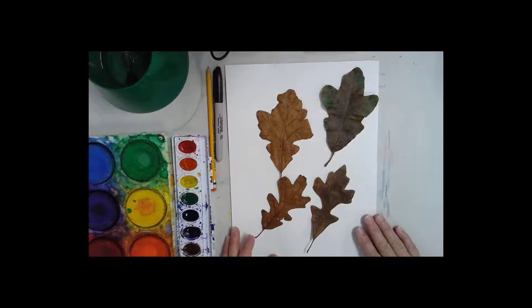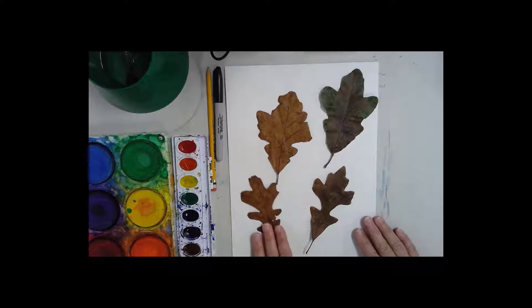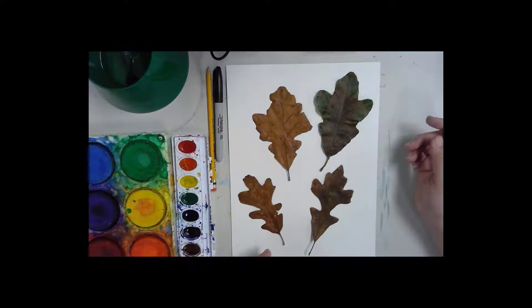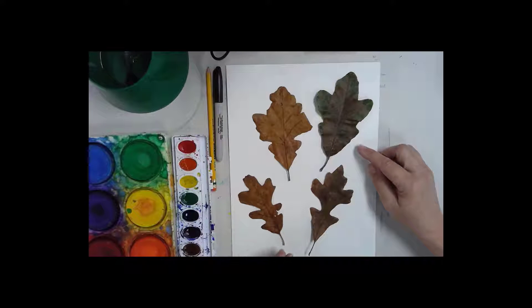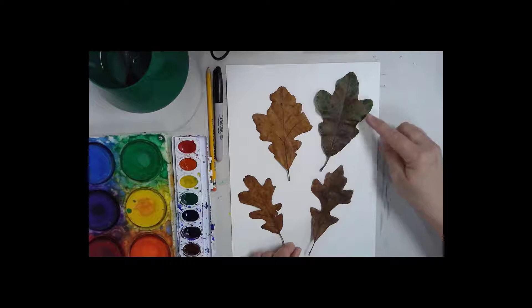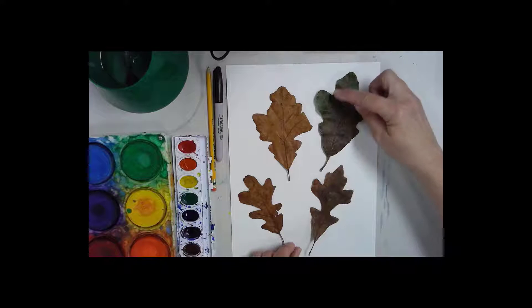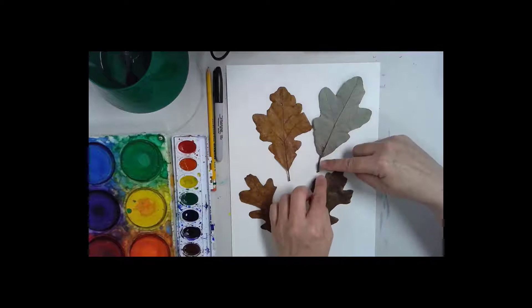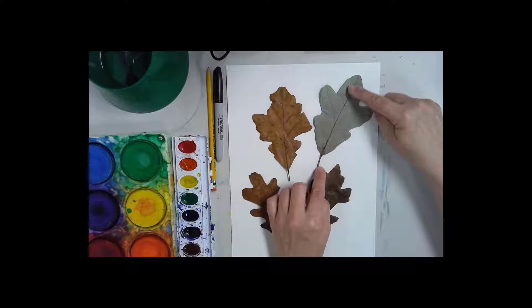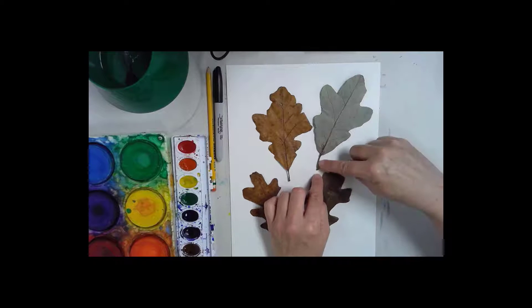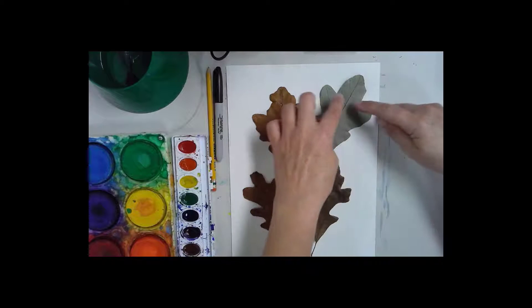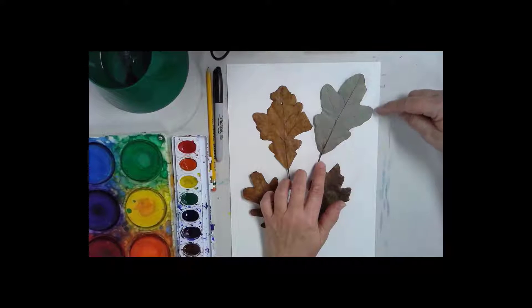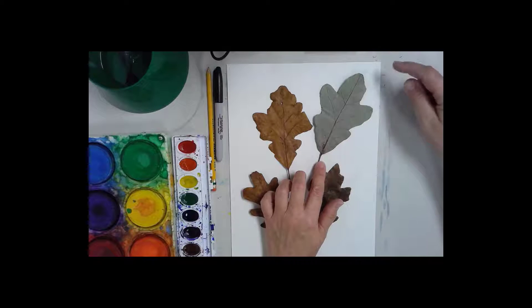But I thought we'd start by talking about or actually looking at some real oak leaves. Mrs. Walker picked these up in her yard and I just wanted you to notice some things about oak leaves. They have curving lines that go around the outside. They have one main vein that runs right up the middle that's connected to the stem and then lots of diagonal lines that come out and each diagonal line is covered with a little curve and then it kind of goes in and around.